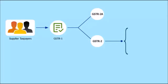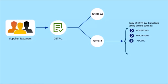GSTR 2 is also a copy of GSTR 2A, except that it allows the receiver to take actions on the submitted invoices, which includes accepting, modifying, adding, or rejecting the invoice details uploaded by suppliers, or keeping the invoices pending for action depending on various situations. The receiver taxpayers can view the invoice data in GSTR 2 almost real-time upon upload, even before the due date of filing GSTR 1 by the supplier taxpayer.